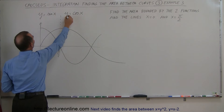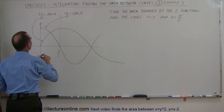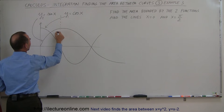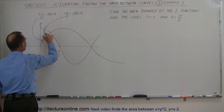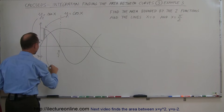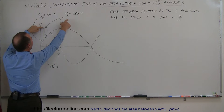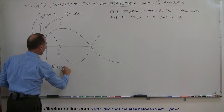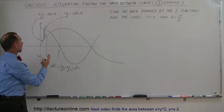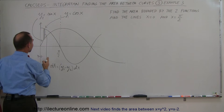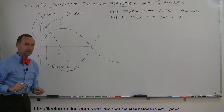I'm going to call this function y1 — that's the upper function — and I'll call this y2, which is the lower function. To find the area, I'll start a small area element dA, which equals the height of that rectangle — the upper minus the lower, y1 minus y2 — times the width dx. To find the total area, I simply integrate the dA's from x equals 0 to x equals pi over 2.